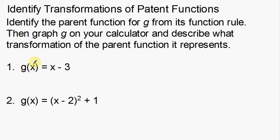The first example: G of X is equal to X minus 3. The first thing we want to do is identify the parent function. I notice the X here is X to the first power — the 1 is not written, we just understand it's there. Mathematicians decided if we write a variable, the exponent is 1, so we don't have to write it all the time.